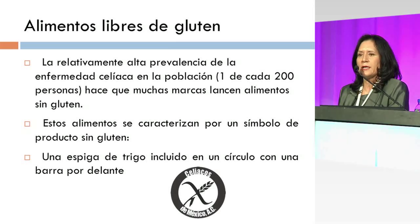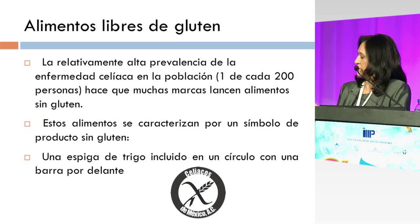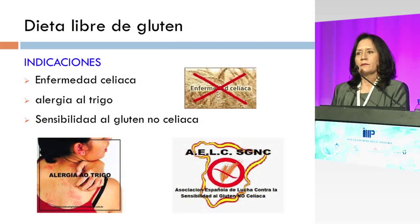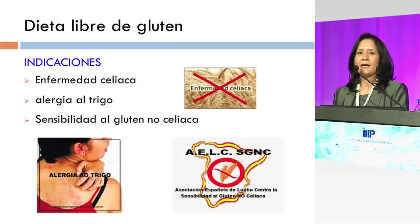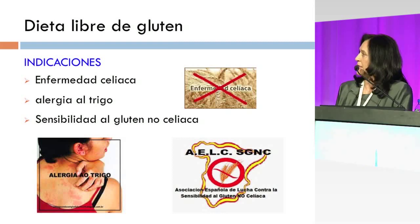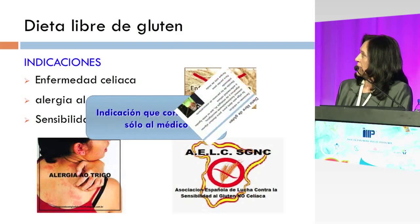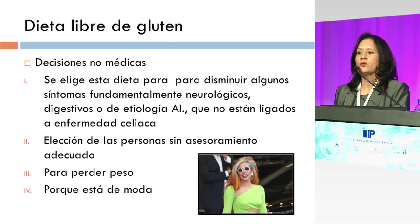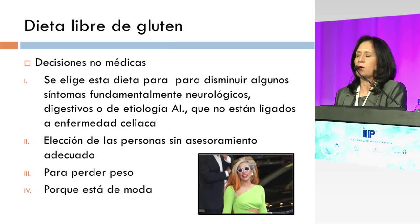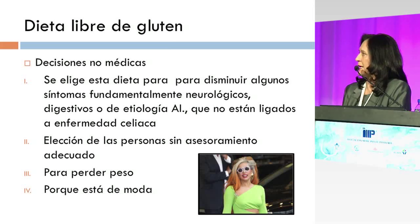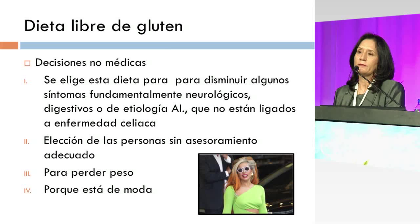Se calcula que de cada cien o de cada doscientos en algunas poblaciones son pacientes con enfermedad celíaca, y pudieran ser una cantidad muy importante. La dieta libre de gluten está indicada en la enfermedad celíaca, en la alergia al trigo y en la sensibilidad al gluten no celíaca; esta es la indicación que corresponde al médico. La dieta libre de gluten como decisión no médica se elige para disminuir algunos síntomas fundamentalmente neurológicos, digestivos o de etiología autoinmune, pero que no están ligados ni relacionados a la enfermedad celíaca. Puede ser también una elección de personas sin asesoramiento adecuado que la utilizan para perder peso o porque está de moda.